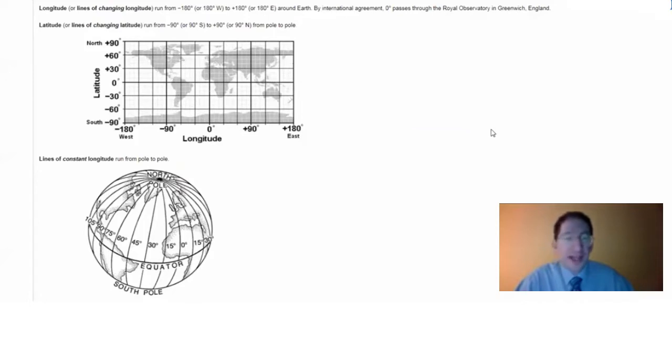Now, when I see lines of longitude, I sometimes get confused. Are those lines of changing longitude or lines of constant longitude? And the same with latitude. So to avoid confusion, in this lab I will always spell it out.